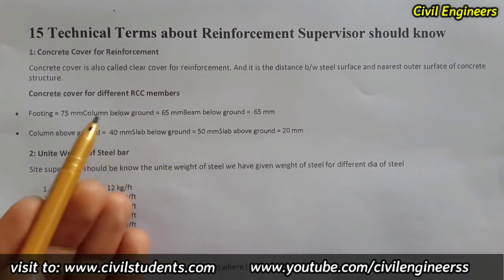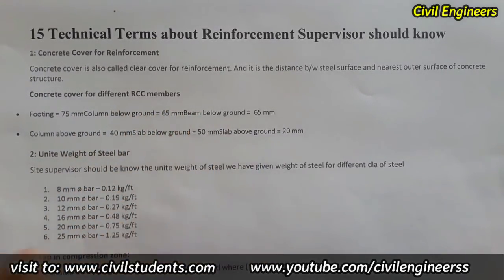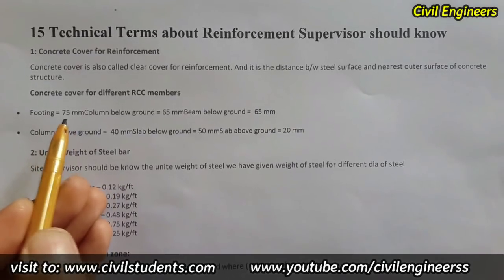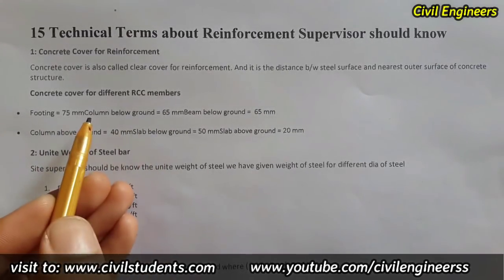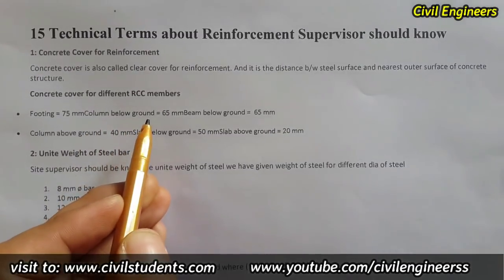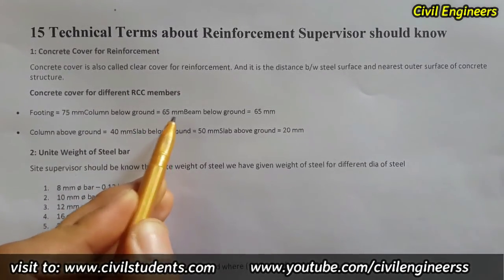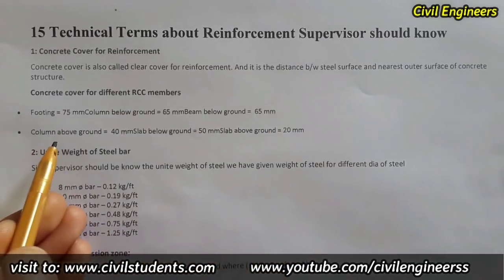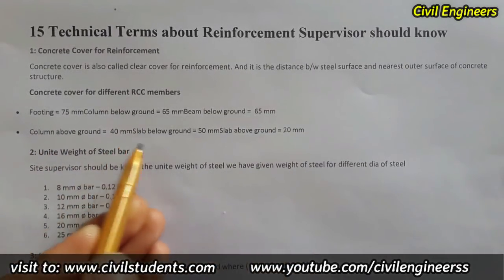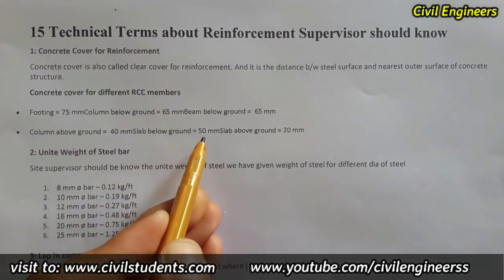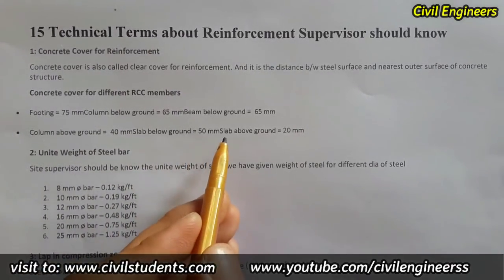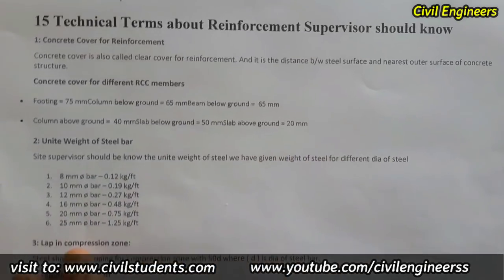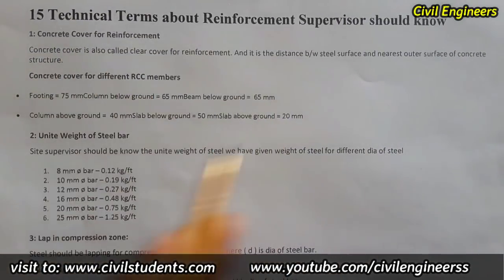Here are the concrete cover values for different members. For column footing: 75 mm clear cover. For column below ground: 65 mm. For beam below ground: 65 mm. For column above ground: 40 mm. For slab below ground: 50 mm. For slab above ground: 20 mm.